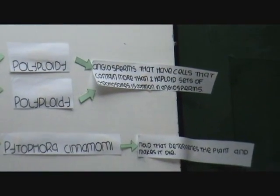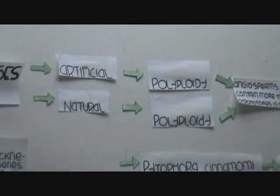What they're saying about genetic diseases in plants is that it's artificial and natural. Manuel, can you give me an example of an artificial genetic disease in plants?